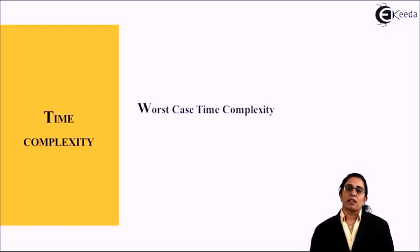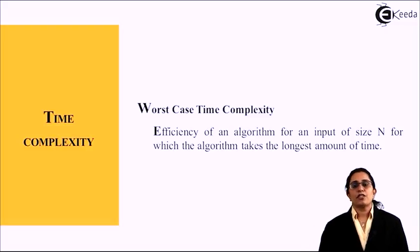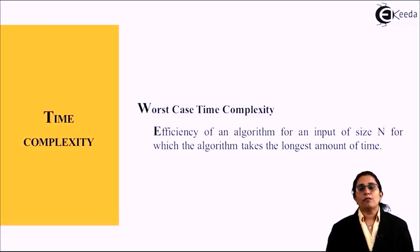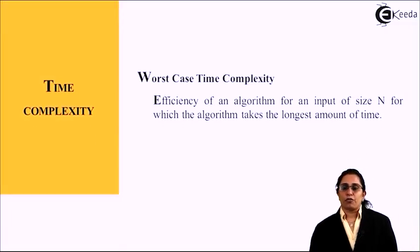The third one is the worst case time complexity. It is the efficiency of the algorithm for an input of size n for which the algorithm takes the longest amount of time.